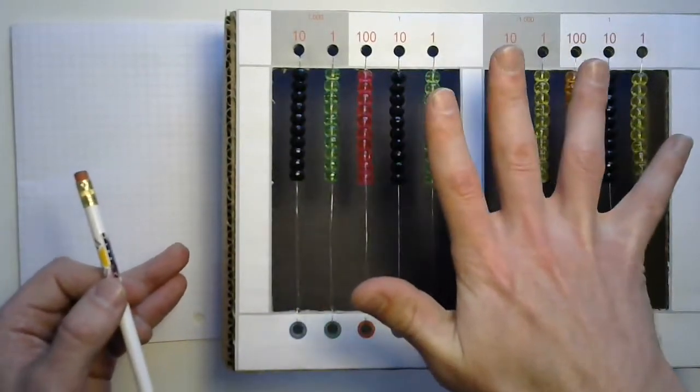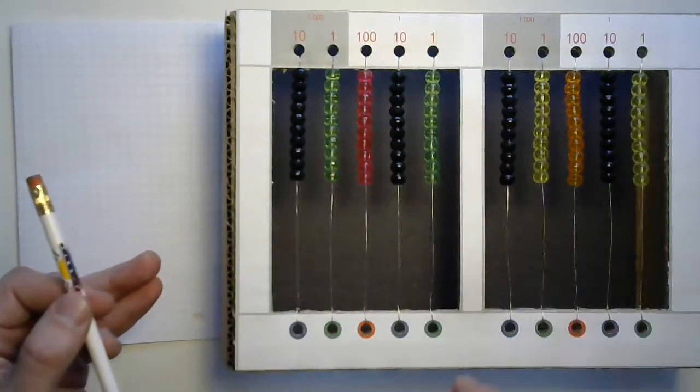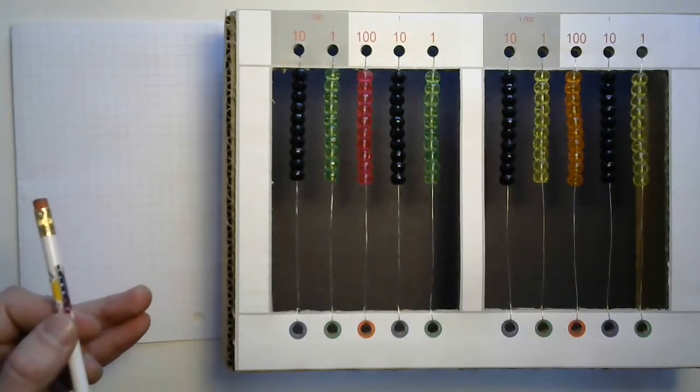All you have to do is print out the template, slap it on a piece of cardboard, cut some stuff out, wire and string it up, put some beads on, and you're ready to divide and conquer with me.